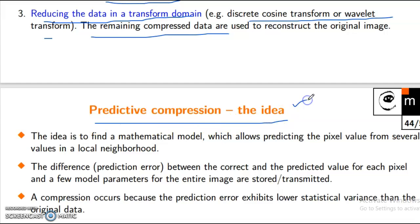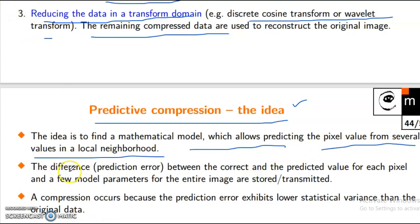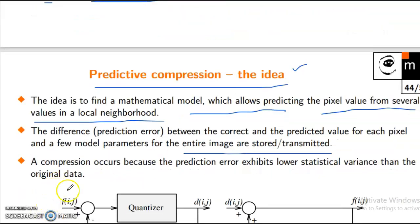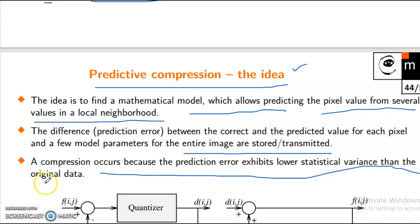Predictive compression — the idea. The idea is to find the mathematical model which allows predicting the pixel value from several values in a local neighborhood. The difference — prediction error — between the correct and the predicted value for each pixel, and a few model parameters for the entire image, are stored and transmitted. Compression occurs because the prediction error exhibits lower statistical variance than the original data.